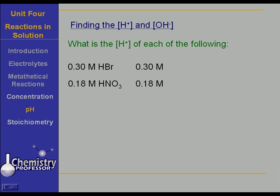Hydrogen ion in brackets means concentration of hydrogen ion. What if we have a 0.5 molar hydrofluoric acid solution? Hydrofluoric acid is a weak acid; therefore, we don't know what the concentration of the hydrogen ion is.